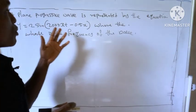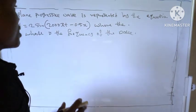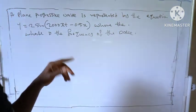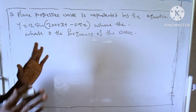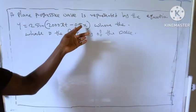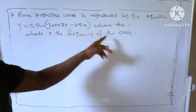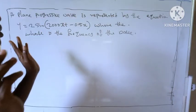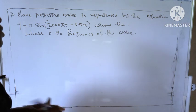It said a plane progressive wave is represented by the equation y = 2sin(2000πt - 0.5x). It said what is the frequency of the wave, so we are only going to calculate for the frequency.